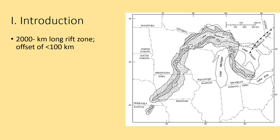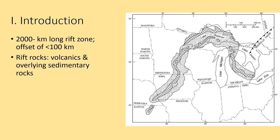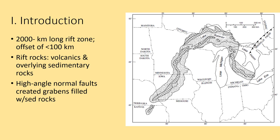To give a quick overview: this is a 2,000-kilometer-long rift zone, about 1,200 miles in length. If we measure the distance from one side of the rift to the other, we're looking at an offset of more than 100 kilometers, about 60 miles across in some locations. The rift itself is characterized by lots of volcanic rock, meaning igneous rock that erupted at the surface, with overlying sedimentary rocks, some mixed in with the volcanics and most deposited on top.